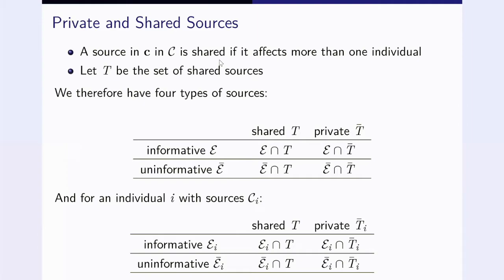We have these private and shared sources. A source c is shared if it affects more than one individual. Let the set t be the set of the shared sources. You can distinguish between four different types of sources: informative versus uninformative and shared versus private, so two times two. You can state this either generally for all the sources that are there, or you can state that in relation to an individual i. The only thing you really need to remember here is that we work with the curly E and the t, and we do that either with that or the complements, and the complement is indicated by the bar on top.